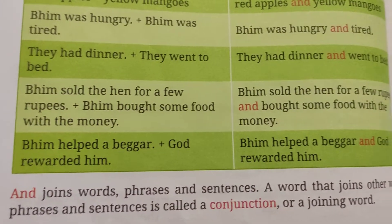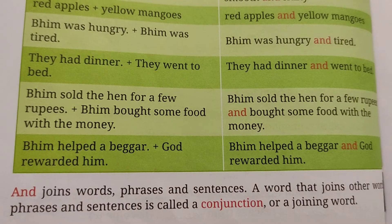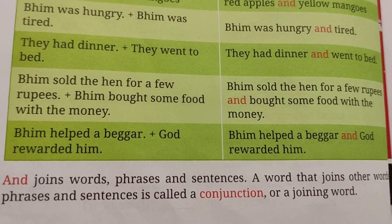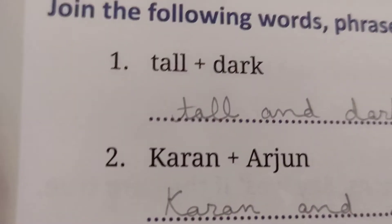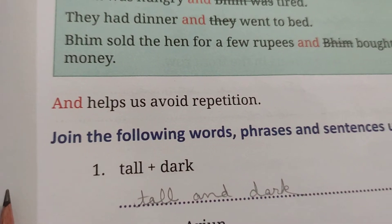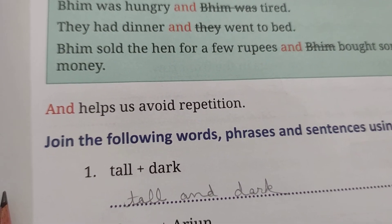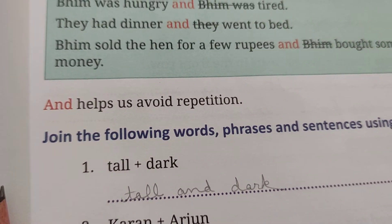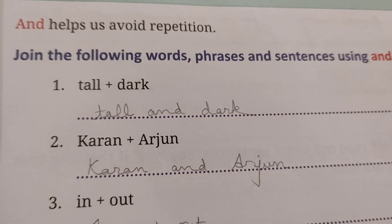AND joins words, phrases, and sentences. A word that joins other words, phrases, and sentences is called a conjunction or a joining word. So AND is acting as a conjunction here. A conjunction is the word which helps to join two phrases or sentences. AND also helps us to avoid repetition. So based on this, we are given this exercise.